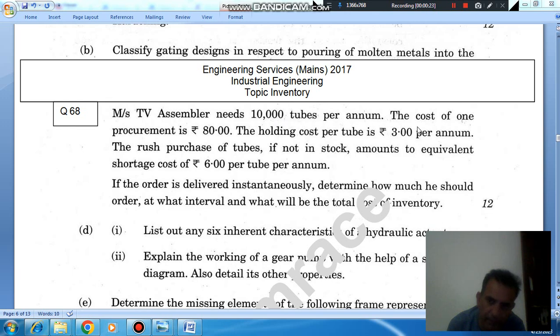The rush purchase of tubes if not in stock amounts to the equivalent shortage cost of Rs. 6 per tube per annum. If the order is delivered instantaneously, determine how much we should order, at what interval, and what will be the total cost per annum.